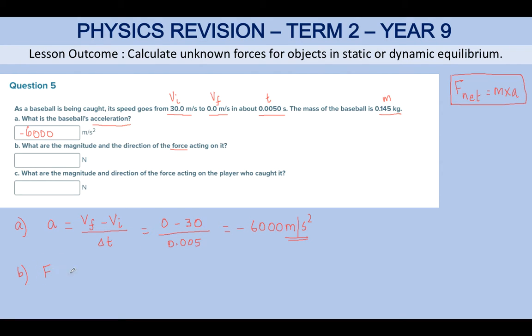Force equals mass times acceleration. Again, direct substitution of the formula: mass is 0.145 times negative 6,000, and you get negative 870 N force.